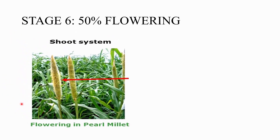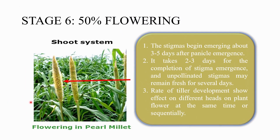The next stage is the 50% flowering stage. The stigma begins to emerge two to three days after panicle emergence, and completion of stigma emergence also takes two to three days. Unpollinated stigmas may remain fresh for several days awaiting pollination. The rate of tiller development affects different heads, and tillers may flower at the same time or sequentially.